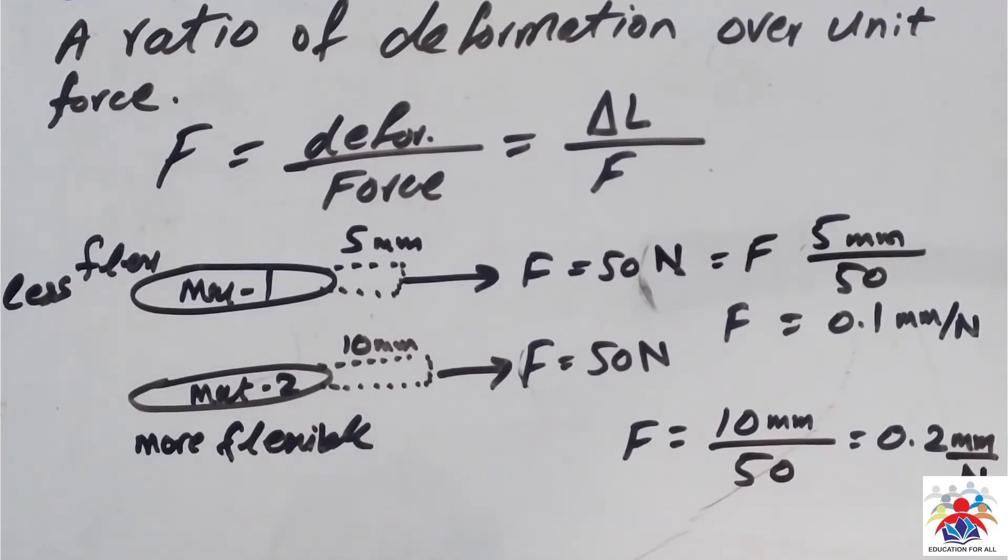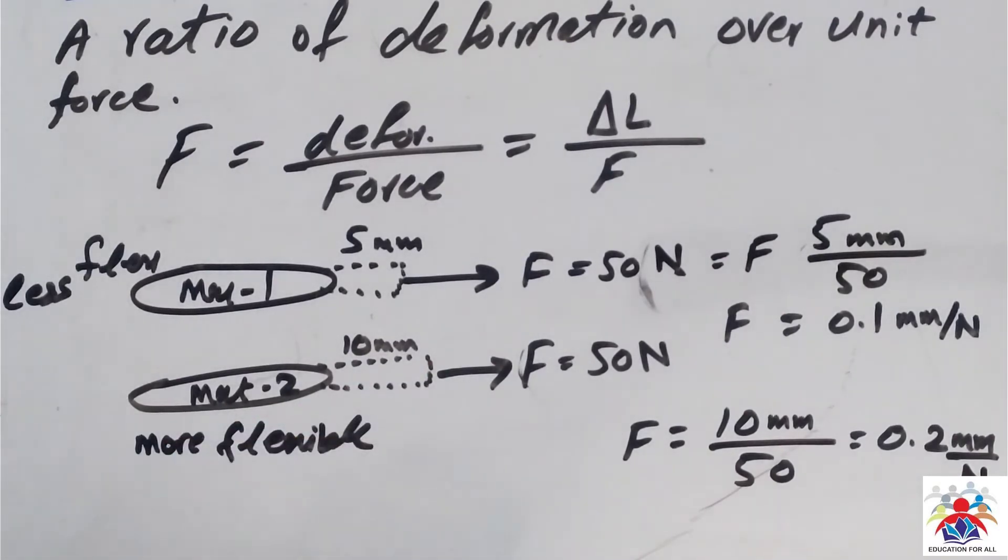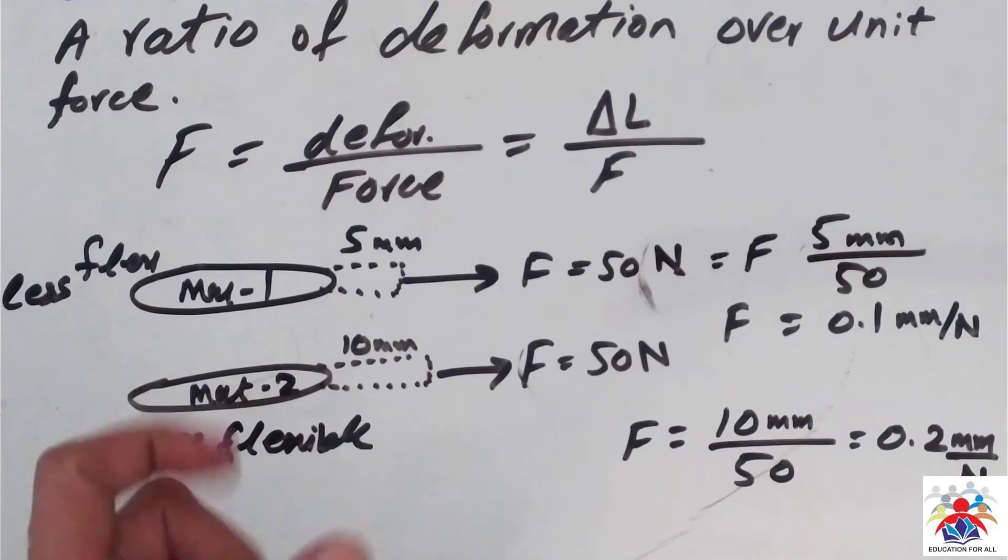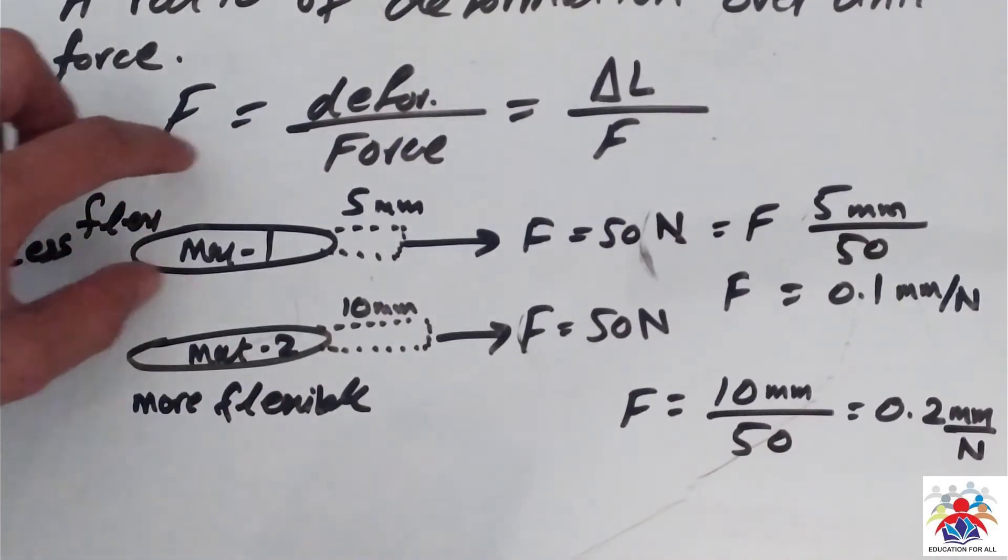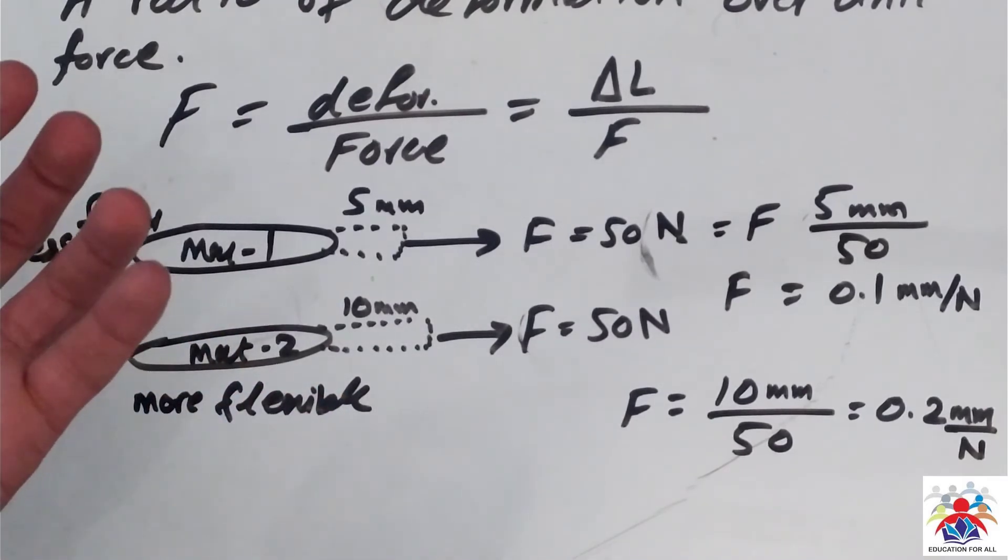Material two is more flexible because, as you can see, the force which we have applied on these materials is the same, but the deformation or the change in length is different. In material one, we have five millimeters, so it means this material is more stiff, so flexibility is less.